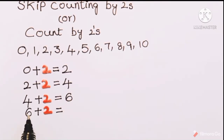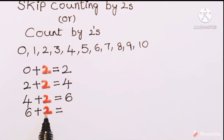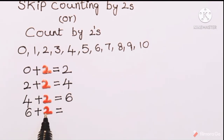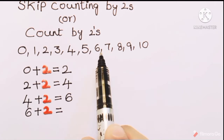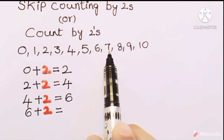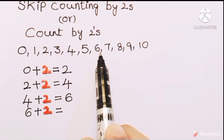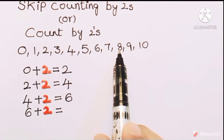Now 6 comes as the previous number, and to this number 6 we should add 2. Each time we are adding only the number 2. So 6 plus 2 — just count 2 numbers forward from 6: 1, 2. So 6 plus 2 is 8.